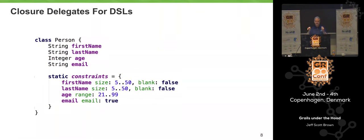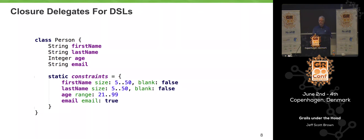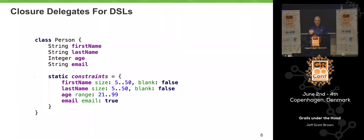Syntactically, that first line of code in the constraints block is a method call — we're invoking a method named 'firstName' and passing a map as an argument. The same for lastName, age, and email — they're method names being invoked with maps as arguments. Something is intercepting those method calls. There's no firstName method in this class, no lastName method, so if you just executed this closure you'd get MissingMethodExceptions. Groovy's method dispatch mechanism is really flexible — one piece of it is that you can write a class with a method called 'methodMissing.'